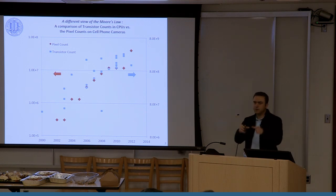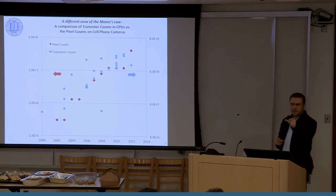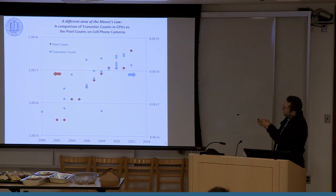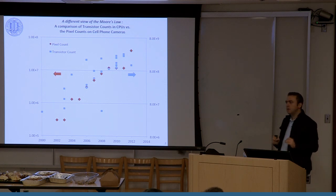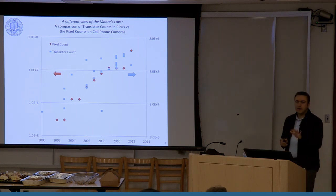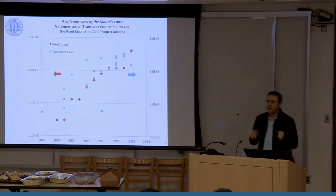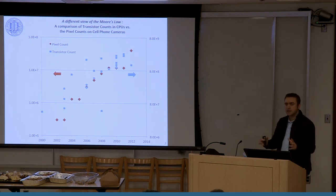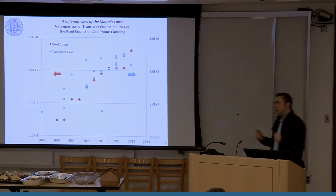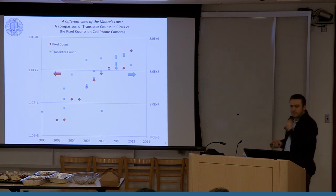A transistor is what's inside your computer chip — whatever is Intel or similar — having millions of transistors. The blue dots here show how the transistor count has been increasing over just the last 10 years. It's a trend known as Moore's Law. Gordon Moore, co-founder of Intel, predicted some 40 years ago that the density of transistors would double almost every 18 months to 2 years. It's an empirical law, and it was true — it's literally the backbone of our computer systems and the internet.